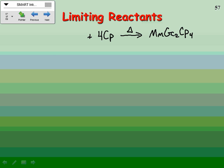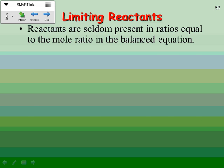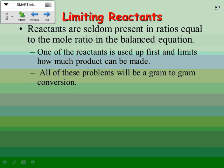The concept is not that hard. It's the working out of the problems that gets a little bit tricky sometimes. So reactants are seldom present in ratios equal to the mole ratio in the balanced equation. That's what we just talked about. Usually one of the reactants is used up first and it limits how much of the product can be made. Limiting reactant problems, just so that we don't add something extra to the mix here, we're gonna do gram to gram conversions. So that's kind of the nice thing about these, I guess, is that you don't have to worry about gram to volume, you don't have to worry about gram to mole, you don't have to worry about particles or any of that stuff. This is just gonna be grams of one thing to grams of something else.